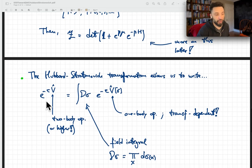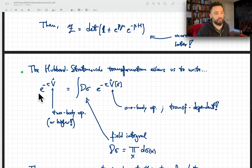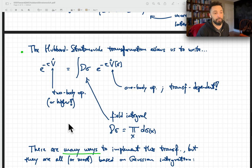The Hubbard-Stratonovich transformation allows us to deal with that. The idea is that it is possible to write this exponential of a two-body operator as an integral, complicated integral, of the exponential of a one-body operator. We pay a price. We have an exponential of a two-body operator, and then we have an integral of exponentials of a one-body operator.